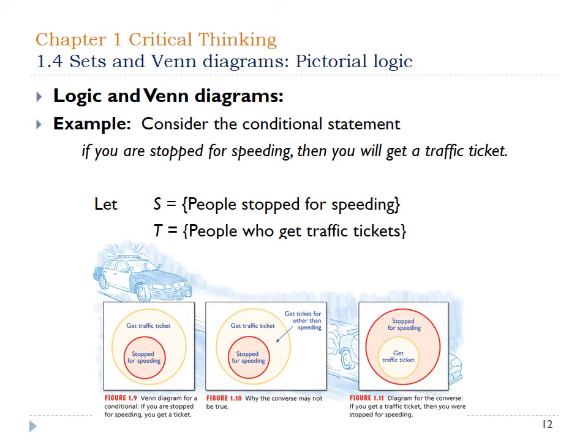Here's another look at Venn diagrams. We also have to look at how the logic between two circles comes together and how that actually matters. In these three Venn diagrams — Figures 1-9 through 1-11 — we have two different groups: people who are stopped for speeding and people who get traffic tickets. In Figure 1-9, we have a group of people who get traffic tickets and a smaller group of people who were stopped for speeding.